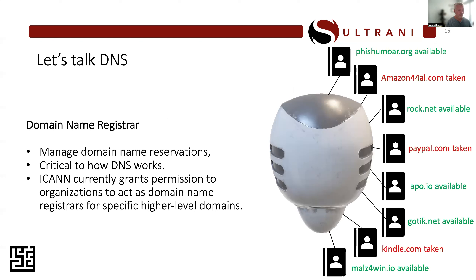Domain name registrars — the companies underneath ICANN that have been given authority to make domain name reservations — are absolutely critical to how DNS works. Different registrars can register different things. Google is probably the most widespread followed by GoDaddy and a few others. At their most basic, you can propose a domain name reservation to any registrar and they'll tell you whether it's available or not — green means available, red means taken.